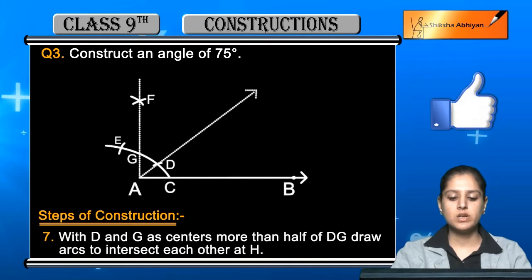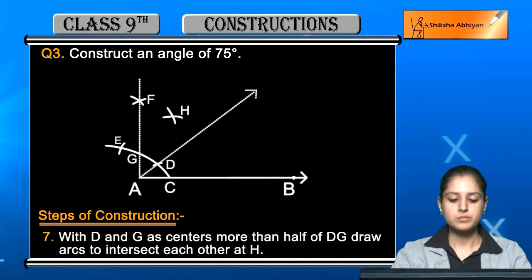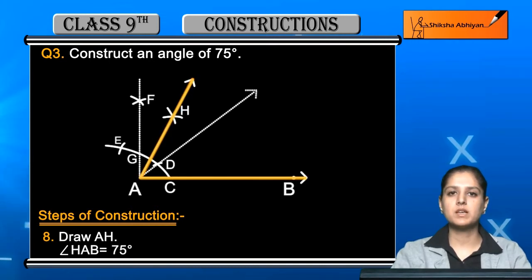We have to draw arcs to intersect each other at H. You have to make arcs which will intersect each other at point H. Take G and D as centers and draw the arcs. Now this angle you have, this is the required angle of 75 degrees.